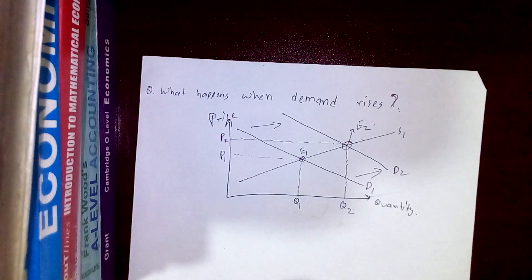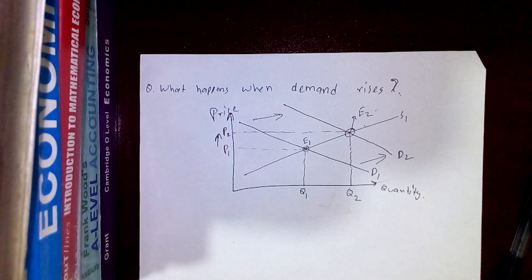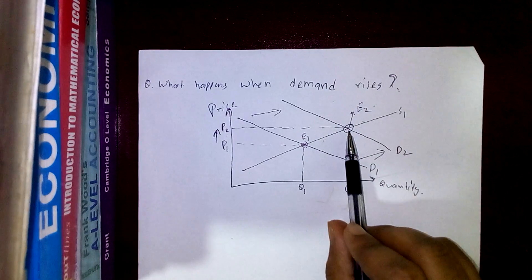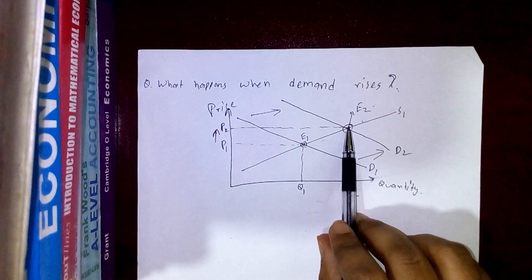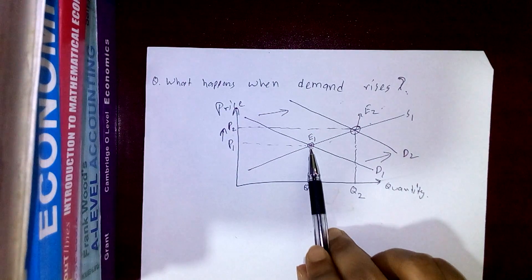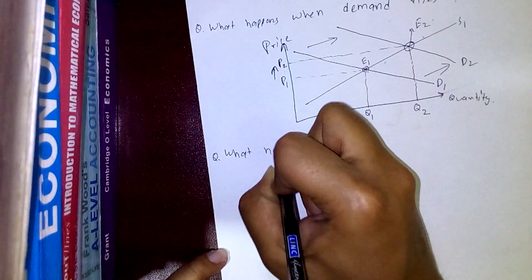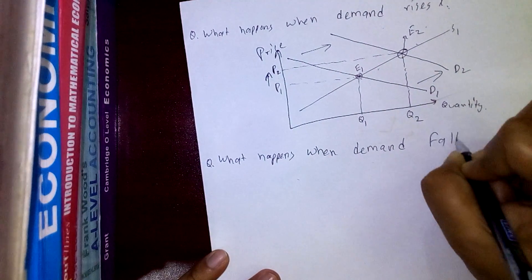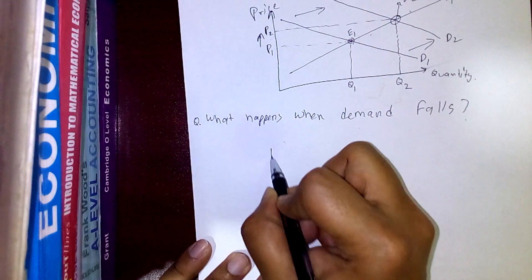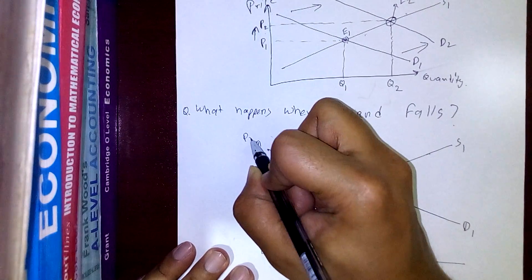When the demand curve shifts rightward, we get a new equilibrium E2, replacing the old equilibrium E1. At this new equilibrium, the price is P2 and quantity traded is Q2. So when demand rises, the demand curve shifts rightward, the equilibrium shifts from E1 to E2, and the price goes up to P2. This explains news reports saying prices are going up because demand is rising.